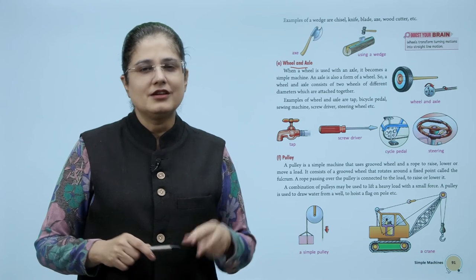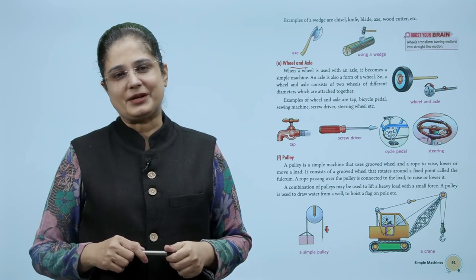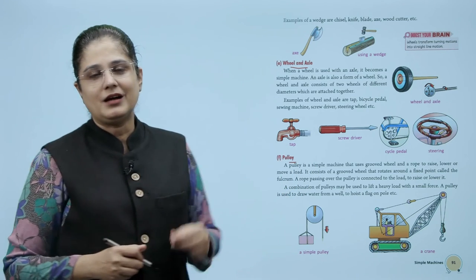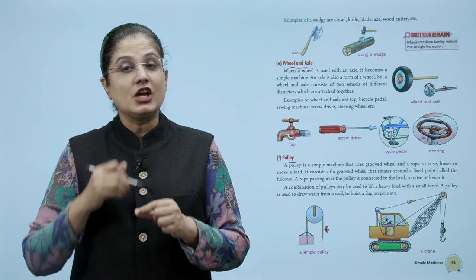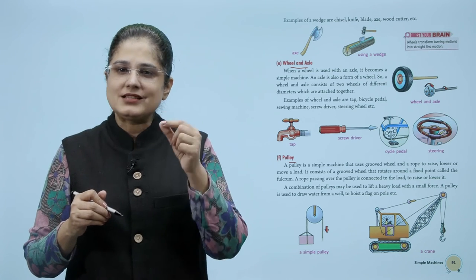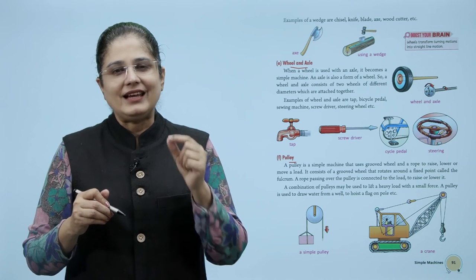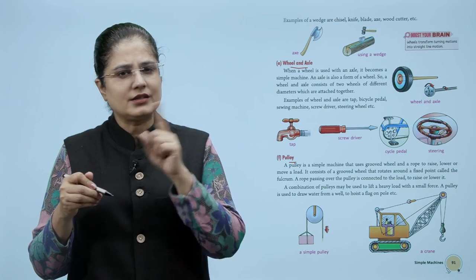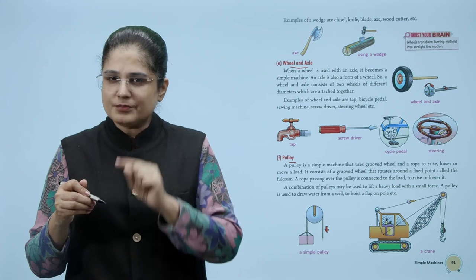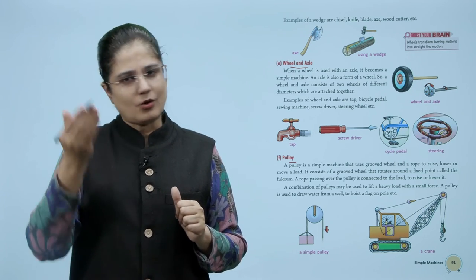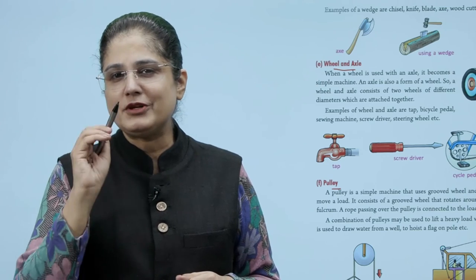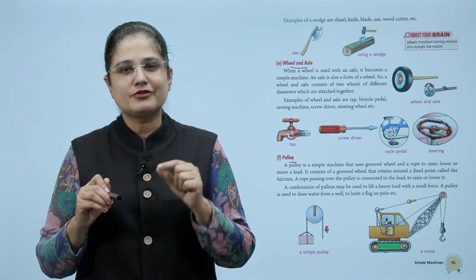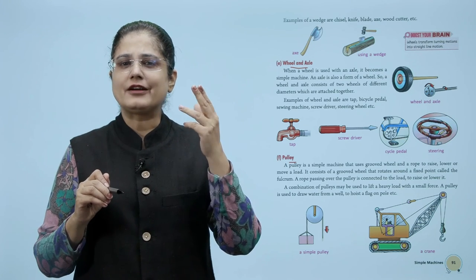Let us now look at a pulley. A pulley is a simple machine that uses a grooved wheel and a rope to raise, lower, or move a load. It consists of a grooved wheel that rotates around a fixed point called the fulcrum. A rope passing over the pulley is connected to the load to raise or lower it. A combination of pulleys may be used to lift a heavy load with a small force. A pulley is used to draw water from a well, to hoist a flag on a pole, etc.